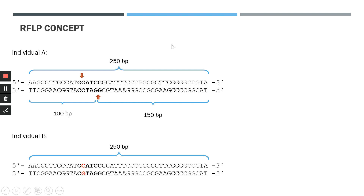Now if we look at individual B, individual B has a single nucleotide polymorphism or SNP within the Hint3 restriction site — the second G has been mutated to a C. In this individual, the Hint3 enzyme can no longer restrict at this site due to the SNP in its recognition sequence. So this recognition site will no longer be detected by the restriction enzyme and will not be cleaved.